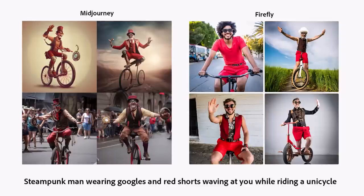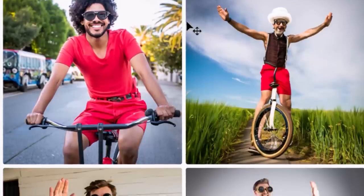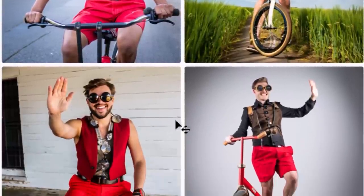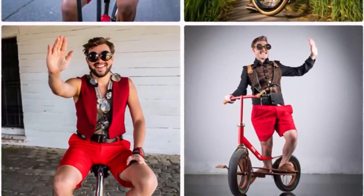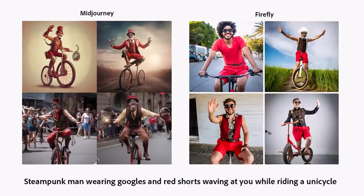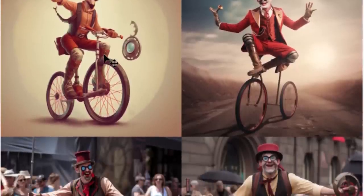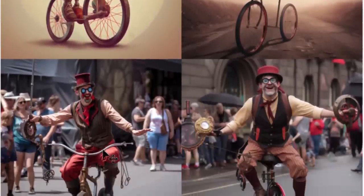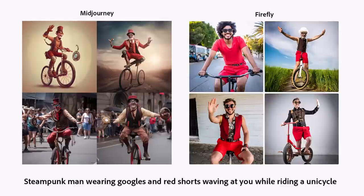Then I tried another crazy prompt: steampunk man wearing goggles and red shorts waving at you while riding a unicycle. In this case, I think Firefly did a little bit better. The images look like stock photos, which makes total sense. I did get a couple of waves in most Firefly images, whereas with Mid Journey I think I only got one wave and no red shorts — everybody's wearing red, but no red shorts. In terms of unicycle, I only got one Mid Journey image with a unicycle, and in Firefly maybe two. But we at least got red shorts on all images.